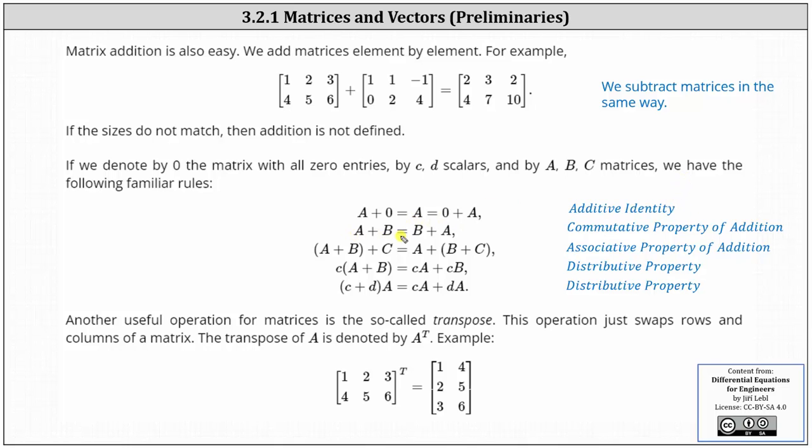Next, we have the sum of A and B plus C is equal to A plus the sum of B and C. This should remind us of the associative property of addition.